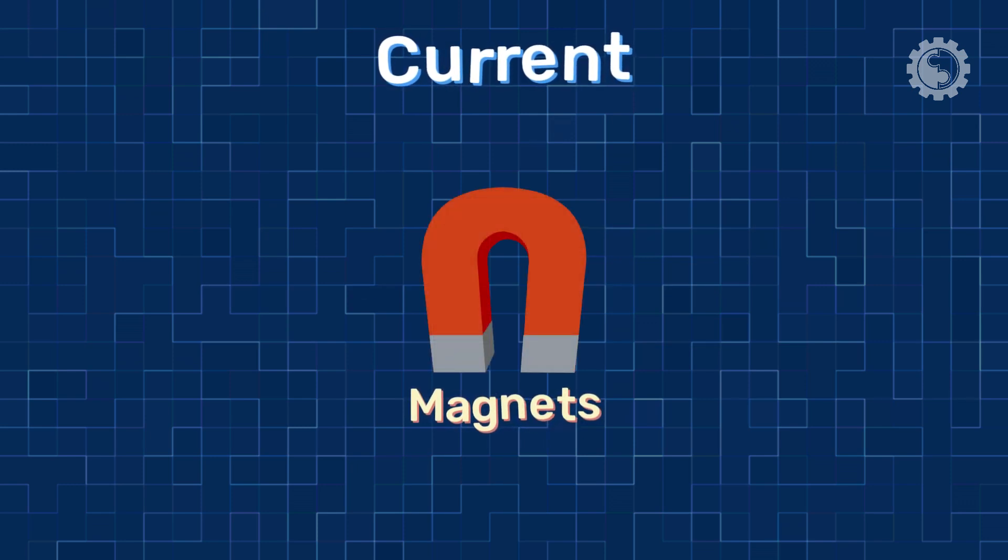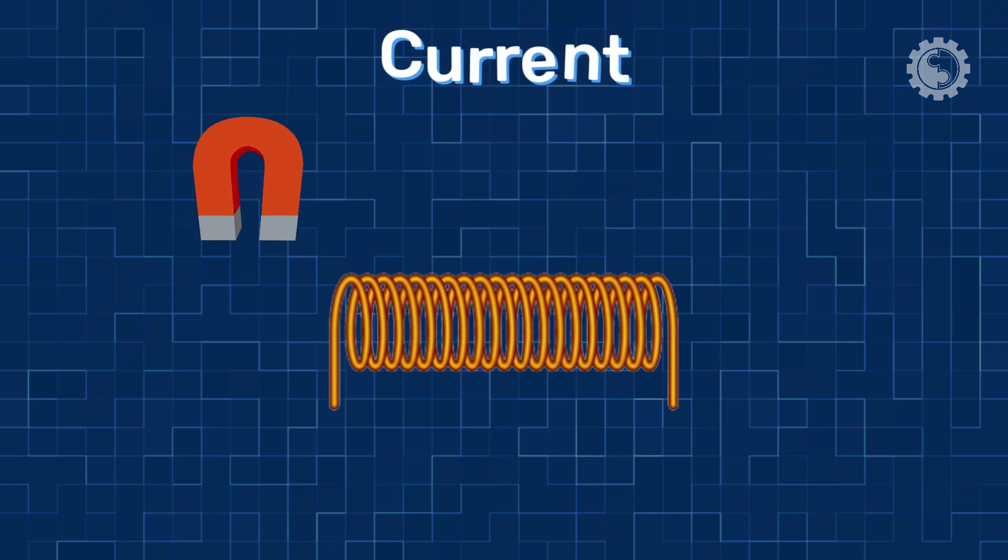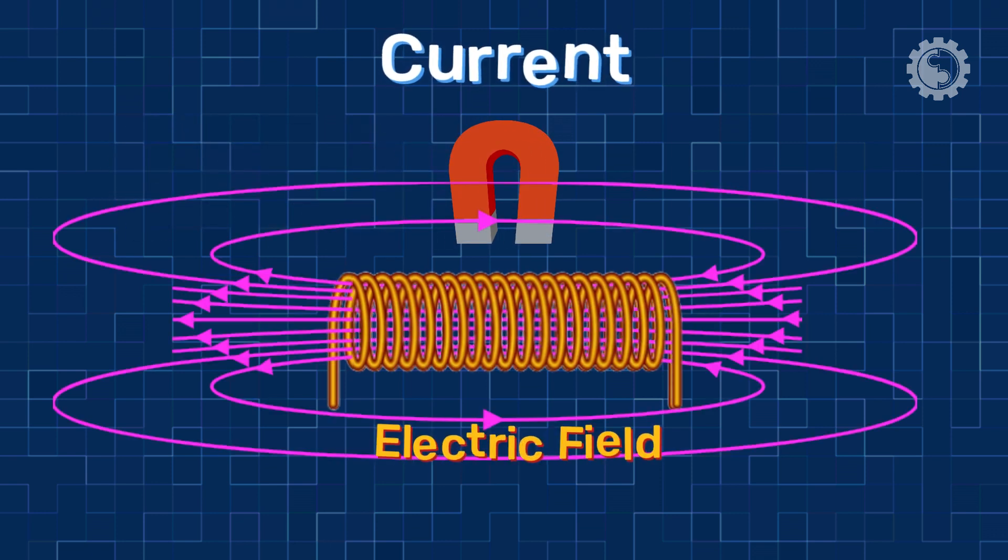But how do we create a continuous flow of electrons? We can use magnets. Hence, a changing magnetic field produces an electric field. This means that if we move a magnet past a wire, it will create an electric field in the wire. This electric field will cause electrons to flow through the wire, creating a current.